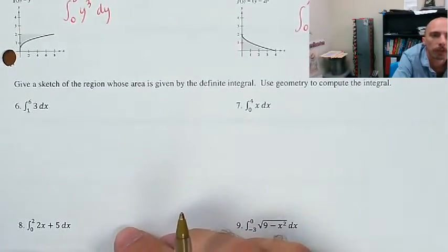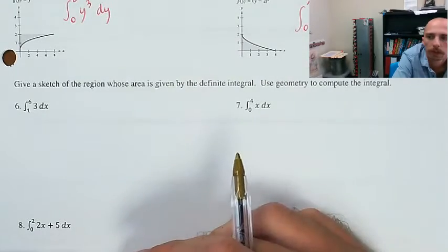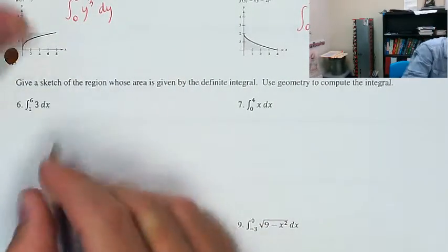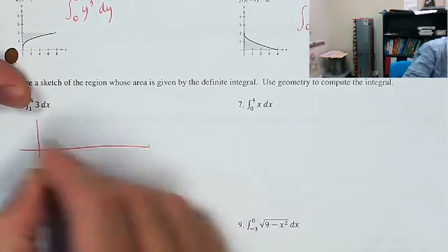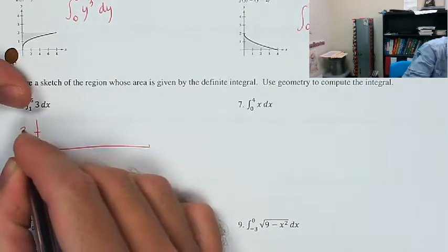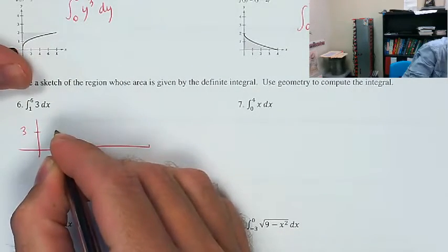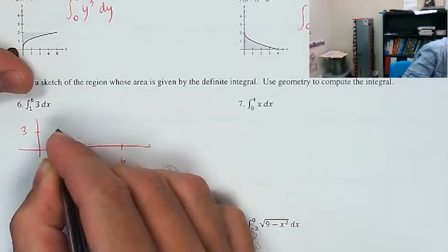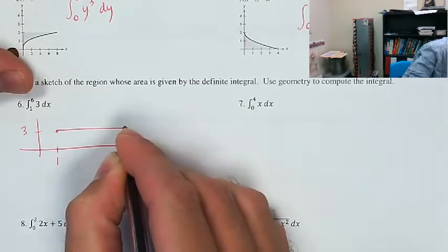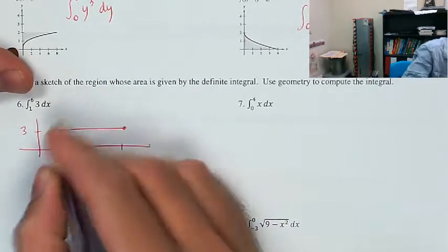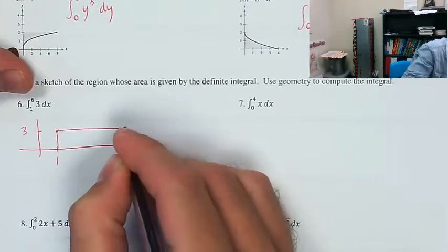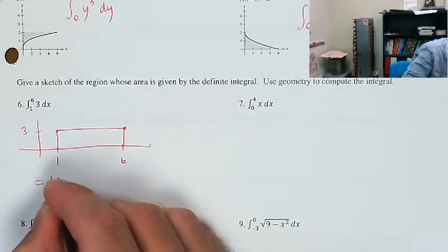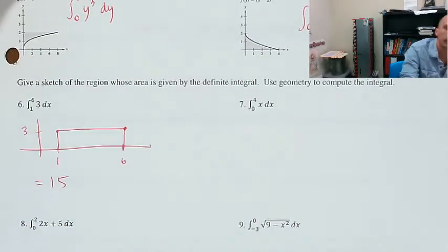Give a sketch of the region whose area is given by the definite integral; use geometry to compute it. The integral from 1 to 6 of 3: that's going to be x running from 1 to 6. Use geometry — it's a rectangle — so that's 5 times 3, equal to 15.